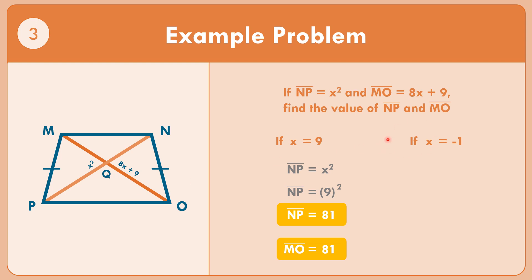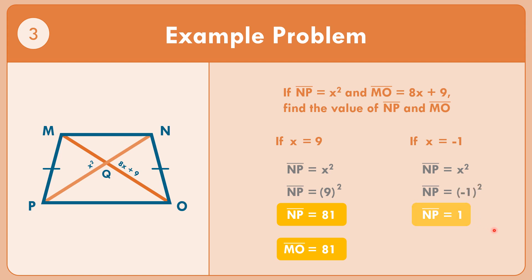If x equals negative 1, line segment NP equals x squared equals negative 1 squared equals positive 1. So line segment NP equals 1, and since diagonals are congruent, line segment MO also equals 1.